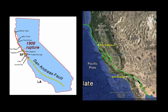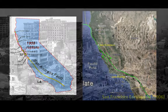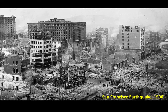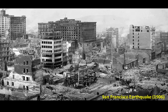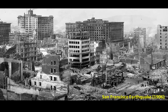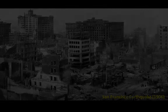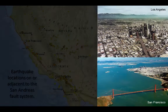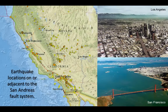The 1906 earthquake and subsequent fire killed more than 3,000 San Francisco residents and left over half the city's population homeless. Today, nearly 40 million people live in California, with many of them concentrated in major cities located close to the San Andreas and other fault systems.